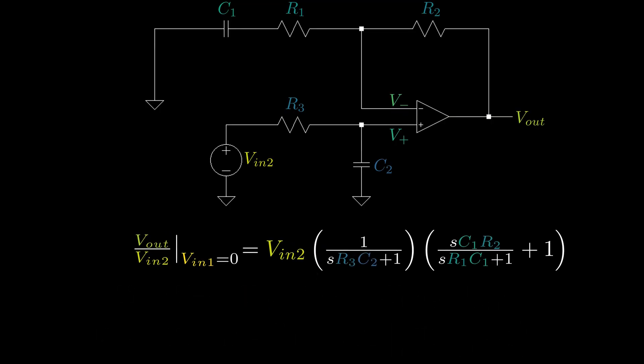Again, we can check our work by setting S to zero and have S approach infinity, and see how the transfer function agrees or disagrees with our intuition. In this case, when S equals zero, or at DC, the transfer function is simply VIN2, and as S approaches infinity, we have a gain of zero.